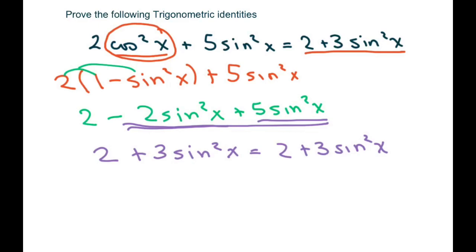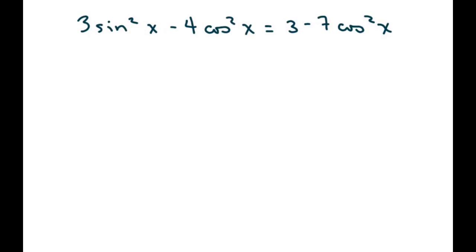The next one you might want to try to do on your own, because it's very similar. Since I have a cosine squared here, I'm going to change the sine squared to one minus cosine squared using my Pythagorean identities.